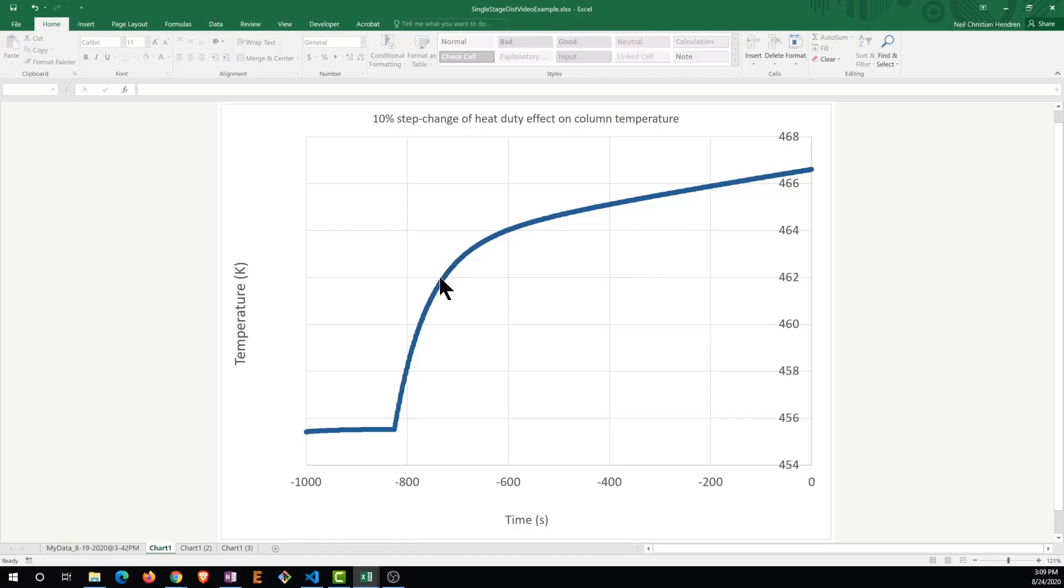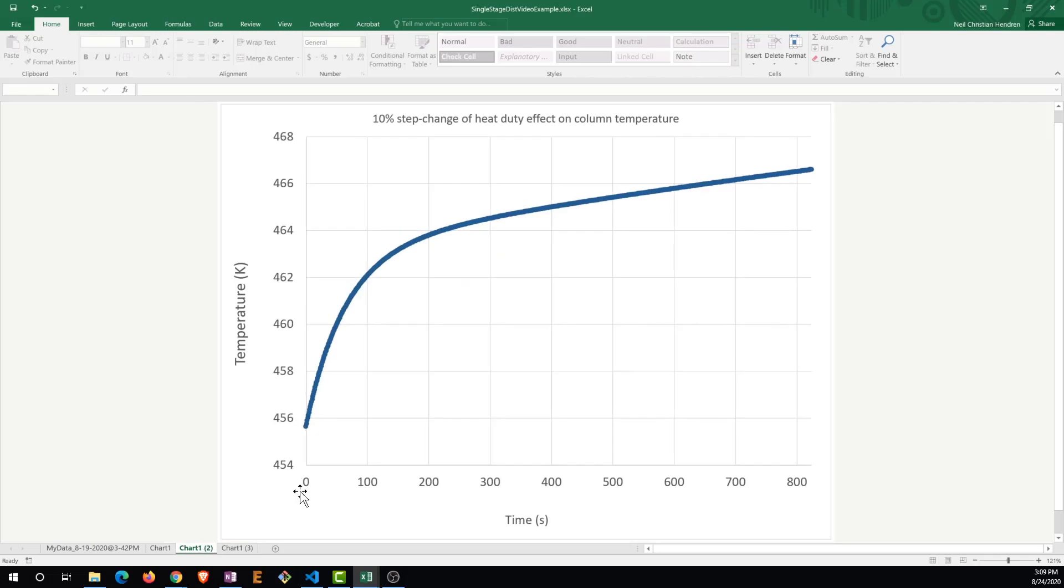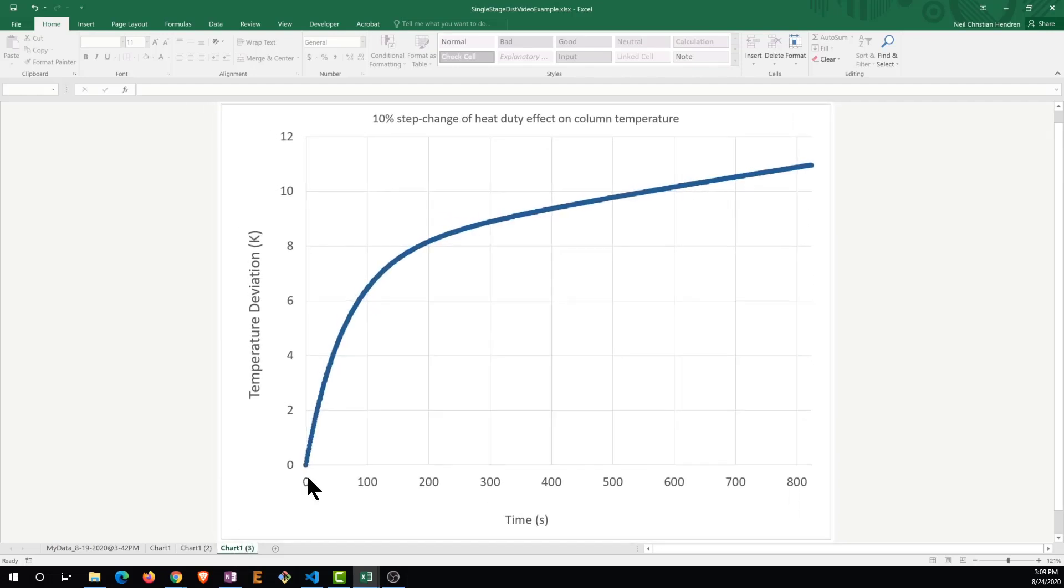Here I have plotted the data in Excel and I have created a plot of the step response. Next we will want to trim the data so that the step change input occurs at t equals zero. Then we will want to convert the process variables to deviation form such that the temperature is zero at t equals zero.